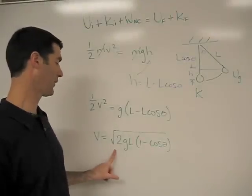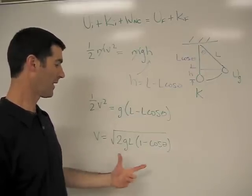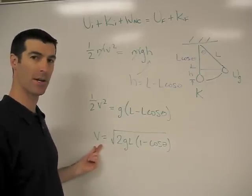Now we have v equals square root of 2gL times 1 minus cosine theta.